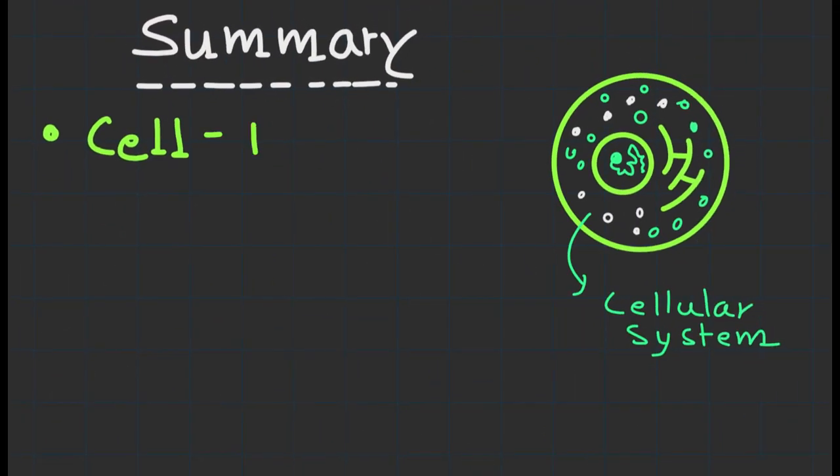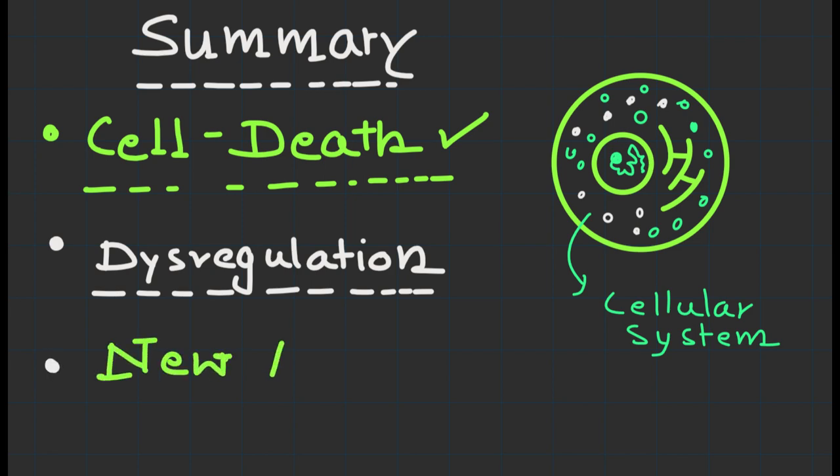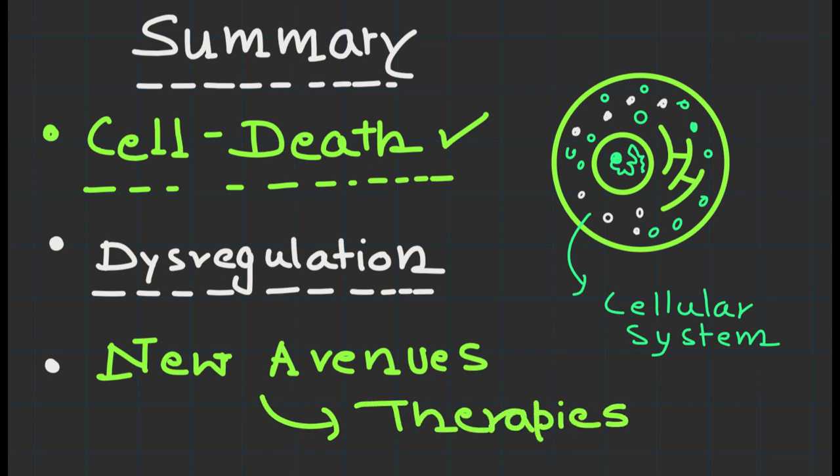Let's conclude all the points. Ferroptosis represents a novel and fascinating form of regulated cell death with implications in various physiological and pathological contexts. The dysregulation of cellular iron metabolism, antioxidant defense systems, and lipid peroxidation are key players in this process. Understanding the molecular mechanisms of ferroptosis may provide new therapeutic avenues for diseases that involve oxidative stress and cell death.